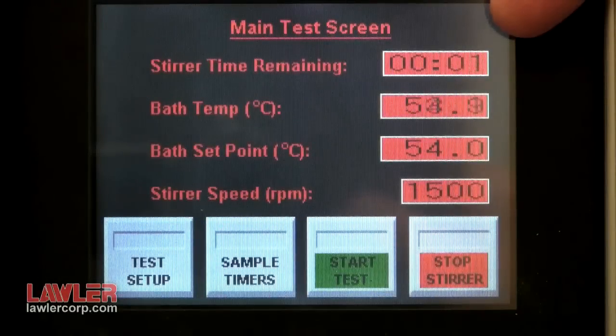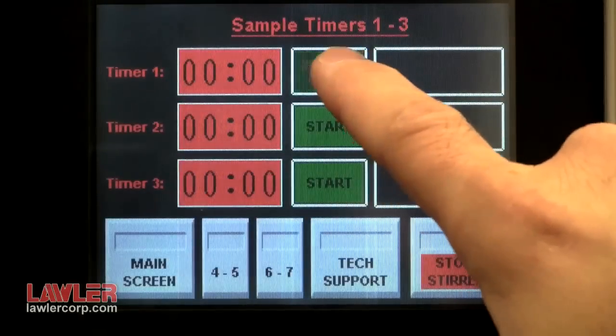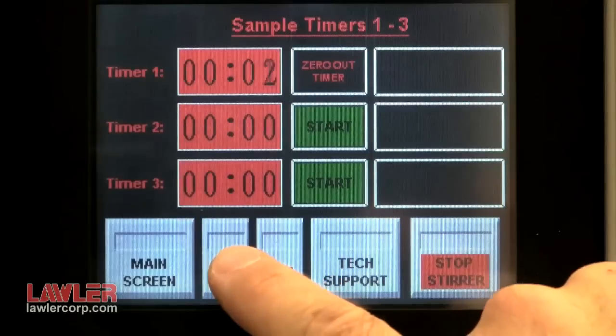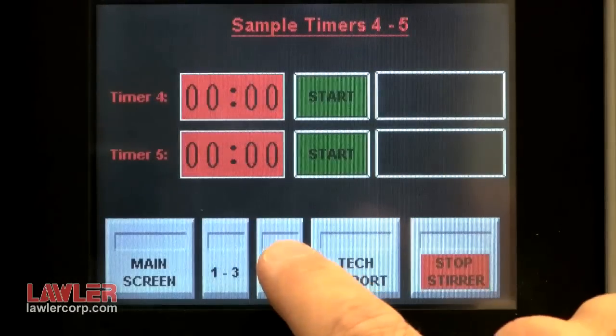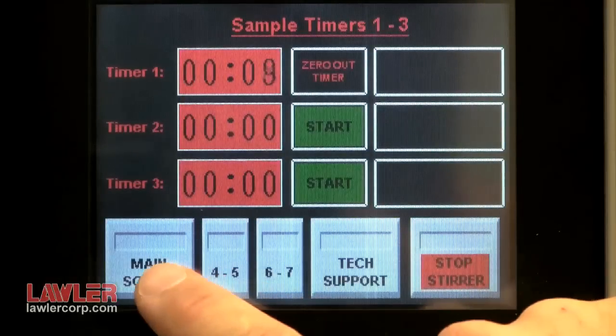As per the D1401 test method, at the end of 5 minutes, the unit stops stirring the sample. Press the convenient touch panel timer to begin counting the time for separation to take place. Seven timers are provided, one for each sample position.